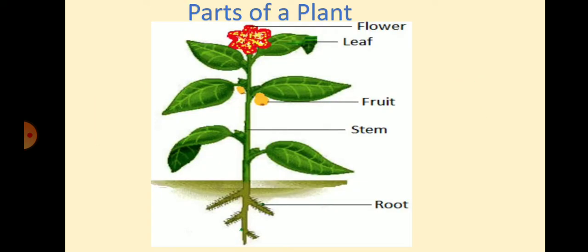Look here at the picture of parts of a plant. What are the parts of a plant? Flower, leaf, fruit, stem, root — these are the main parts of a plant. But out of them, which is the most beautiful and colorful part of a plant? Yes, it is the flower.